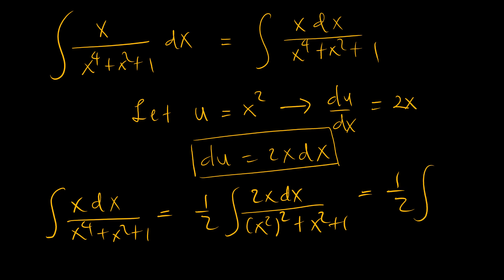Which means we have a half. In place of 2x dx, we have du. And then we have, since u is x squared, so we have u squared plus u plus 1.